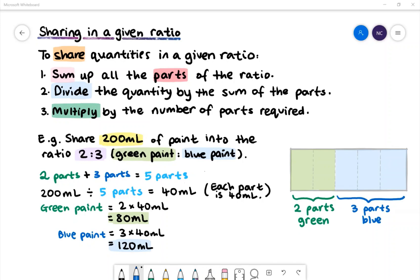To share quantities in a given ratio, first we sum up all the parts of the ratio. Second, we divide the quantity or number by the sum of the parts. Third, we multiply by the number of parts required.